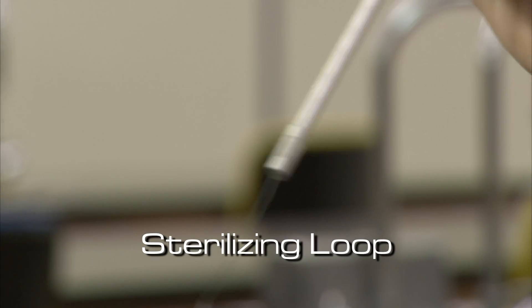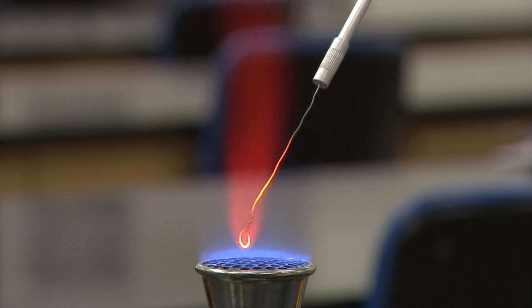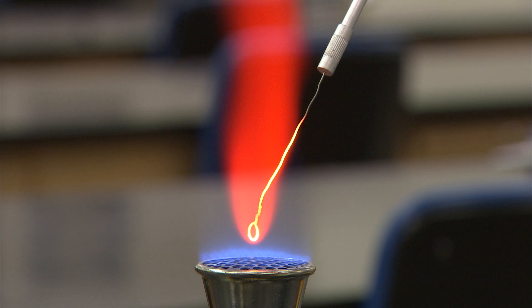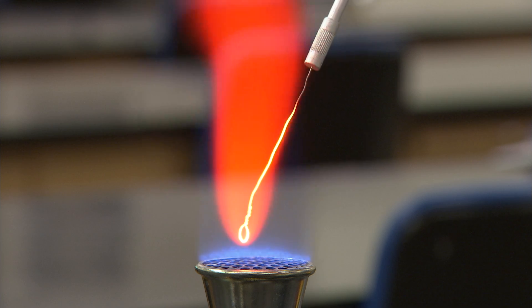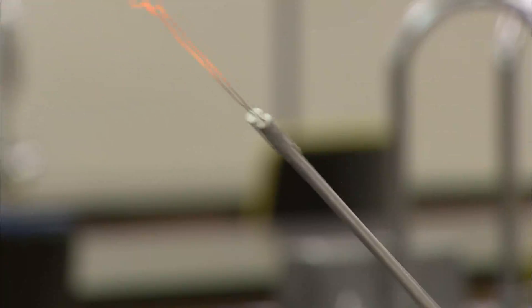Once the flame is established, the primary use will be to sterilize a wire loop used to transfer bacteria. The entire wire should be placed in the flame to ensure it is completely sterilized. It is not necessary to allow the wire to get red hot for more than a few seconds.